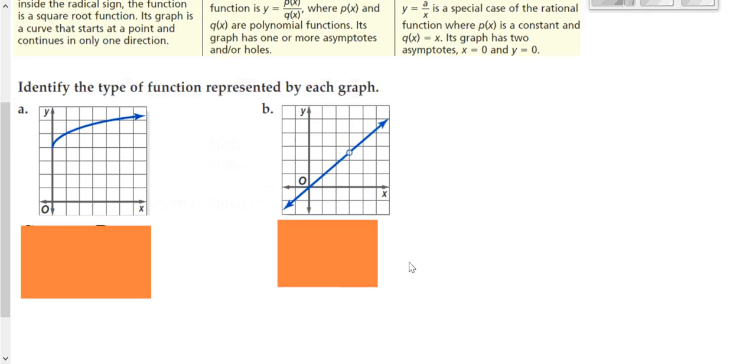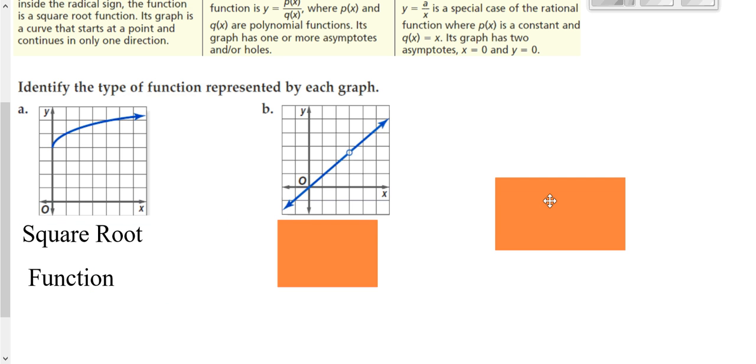So classify each one of these as something. Here, this is just half of a parabola opening sideways. So that's your square root function.